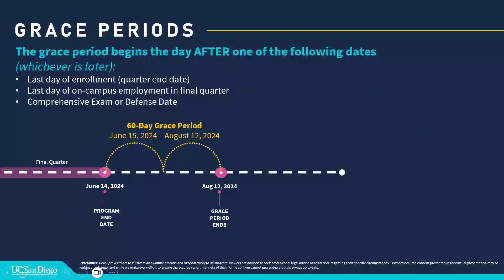Here we have an illustration of when a student's grace period may begin. For example, let's assume a student's last term of enrollment is spring 2024, and that term will end on June 14th of 2024. Let's assume a student has no on-campus employment and is an undergraduate student, so they have no comprehensive exam and no defense dates. In this situation, the last date would be June 14th, so the student's grace period would begin June 15th, 2024, through August 12th of 2024 — a 60-day grace period.